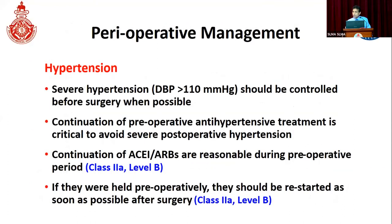Regarding perioperative management: severe hypertension — especially when blood pressure is more than 180 systolic and 110 diastolic — should be controlled before surgery when possible. If the patient is on antihypertensives and blood pressure is adequately controlled, those should be continued. The guidelines say continuation of ACE inhibitors and ARBs is reasonable, especially when given for heart failure, and should be continued cautiously during the perioperative period. If they are stopped preoperatively, they should be restarted as soon as possible after surgery.